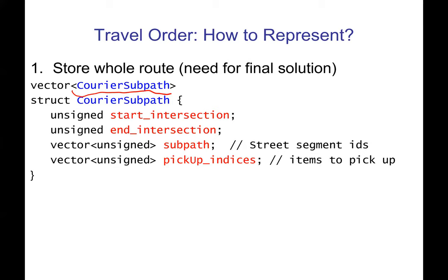Each piece of that vector is a start intersection, an end intersection, and a list of street segment IDs to get in between them — just like your milestone three path solution. And then one last thing: what items would you like to pick up at the start intersection? Sometimes there won't be anything to pick up, but if your start intersection is a pickup intersection for delivery four, then you might say I want to pick up delivery four and store pickup index four. Sometimes there could be multiple things you can pick up at an intersection — say deliveries four and eight — and you might pick them both up, or not, if it makes your truck too full.